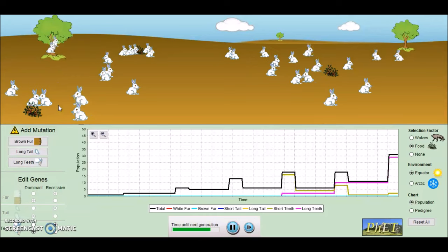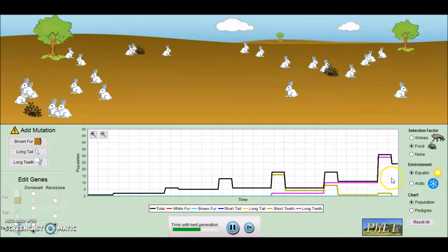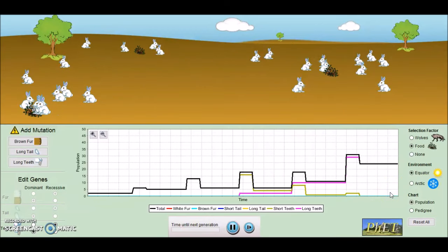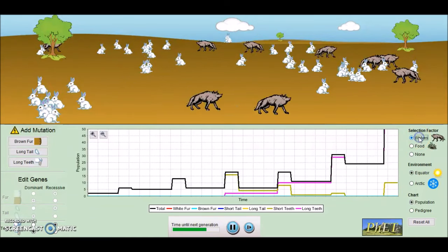Which means over time, the bunnies with long teeth, as we can see on the graph here, are going to overtake the bunnies with short teeth because there is more food available to them. And now we just have loads of bunnies all over the place.